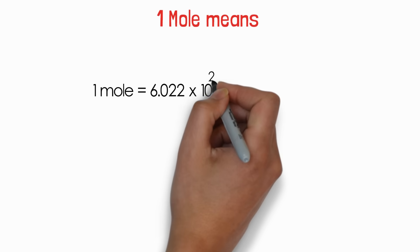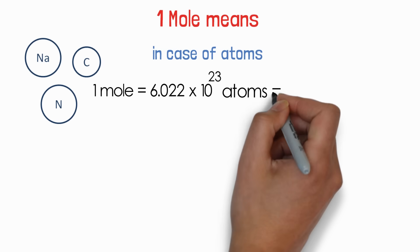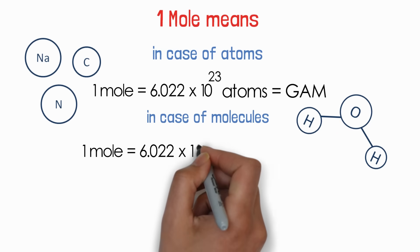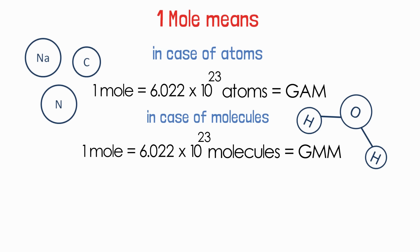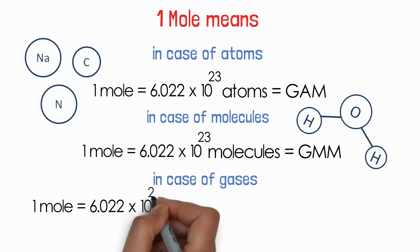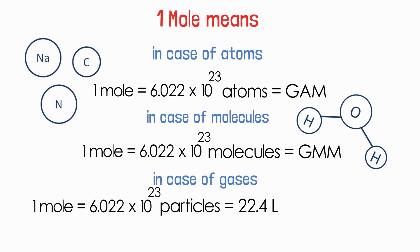Now let's see the relation between 1 mole, molar mass, and molar volume. One mole is 6.022 × 10²³ particles. For atoms, 1 mole equals 6.022 × 10²³ atoms, and the mass of that many atoms equals gram atomic mass. For molecules, 1 mole equals 6.022 × 10²³ molecules, and their mass equals gram molecular mass. For gaseous particles, 1 mole equals 6.022 × 10²³ gaseous particles, and the volume of that many particles is always 22.4 litres — called the molar volume.